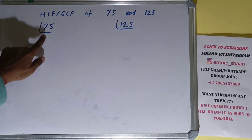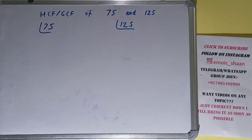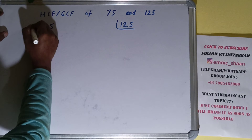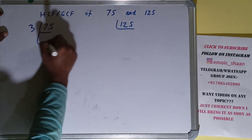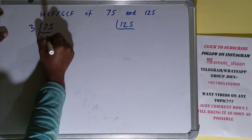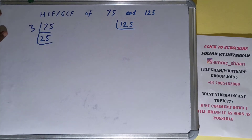We'll start with the number 75 and check with the lowest prime number, which is 2. Is 75 divisible by 2? No. So we'll check with the next lowest prime number, which is 3. Is 75 divisible by 3? Yes it is, and we'll have 25. Is 25 divisible by 3? No.